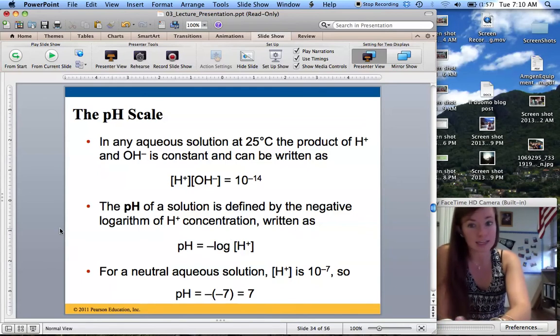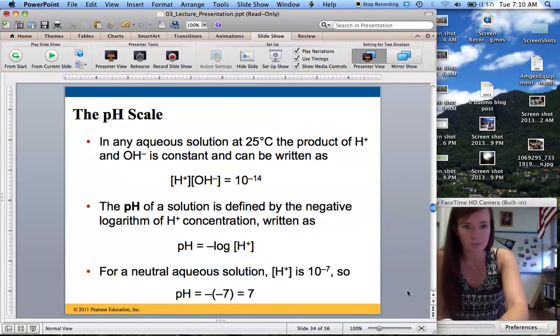So for a neutral aqueous solution, H+ is 10 to the negative 7th. So the pH is negative 7 times 7 equals 7, because negative log of 10 to the 7th would be negative 7. So that's how the pH scale works.